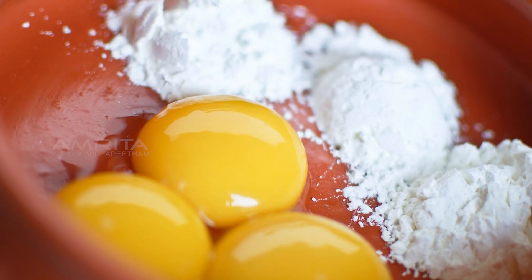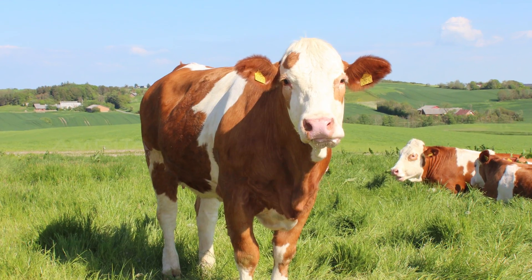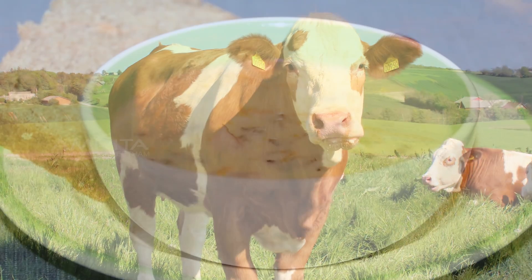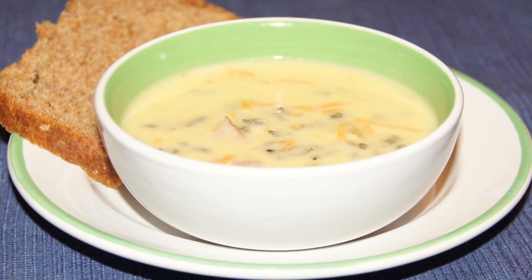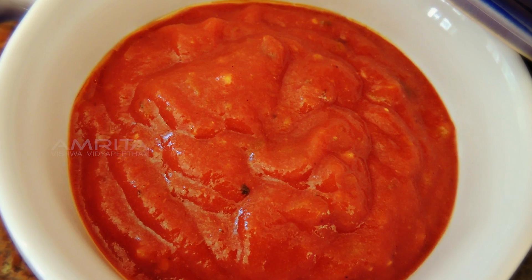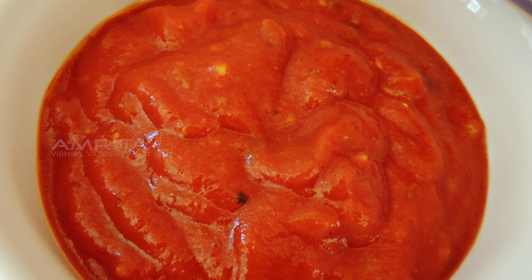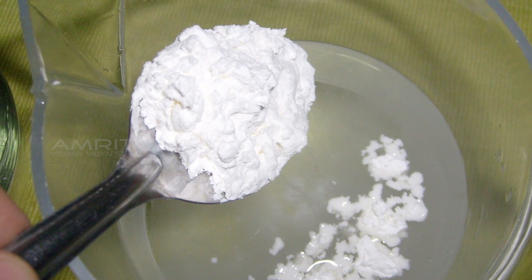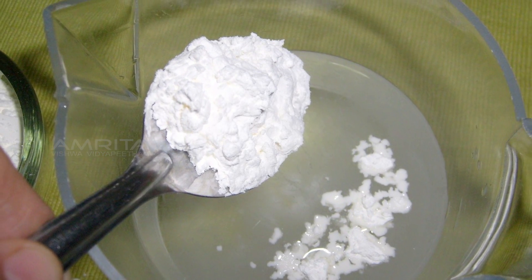Starch is naturally abundant storage form of carbohydrate in plants and animals. Starch is a polysaccharide carbohydrate consisting of a large amount of glucose monosaccharide. Natural starches are mixtures of amylose and amylopectin.